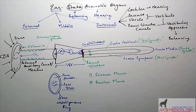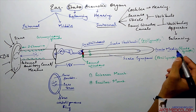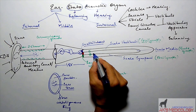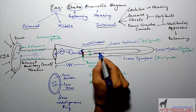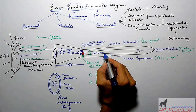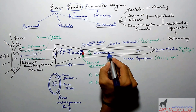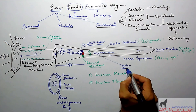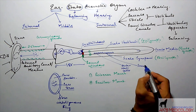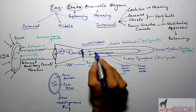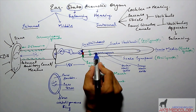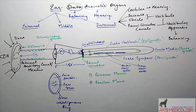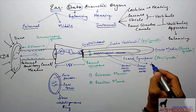The cochlea performs the important function of converting mechanical or physical sound signals into neuronal impulses. This is achieved by the organ of Corti, which is a spiral organ located inside the scala media. The organ of Corti comprises outer hair cells, located throughout the outer portion of the scala media, and inner hair cells located slightly inward — both running throughout the cochlea. They are called hair cells because they possess fine hair-like projections which are excitatory.